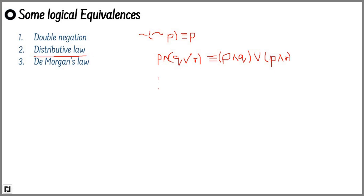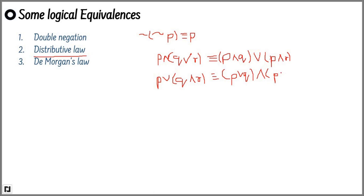Similarly, if we have P OR (Q AND R), it is equivalent to (P OR Q) AND (P OR R).